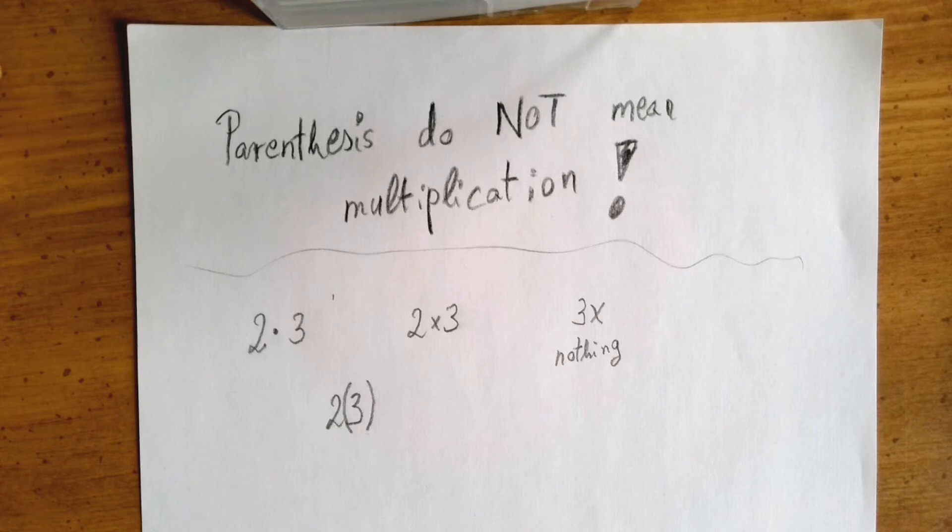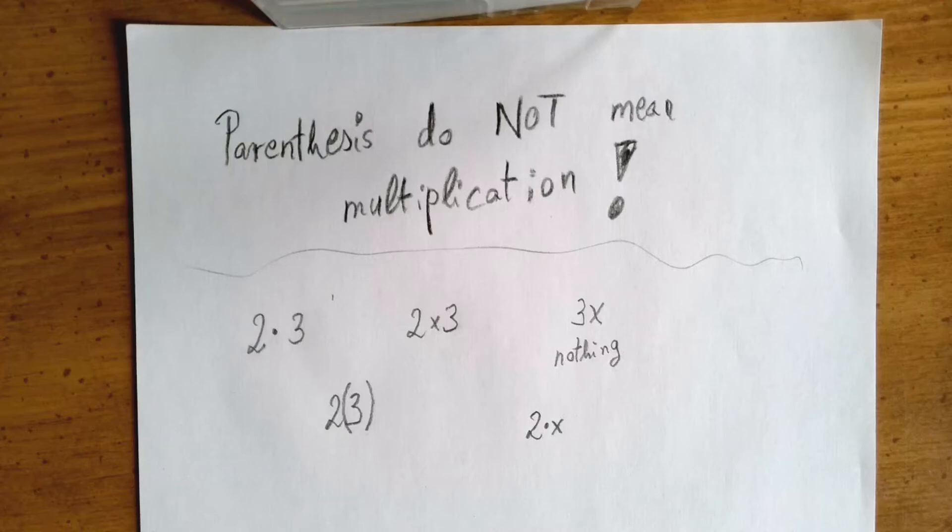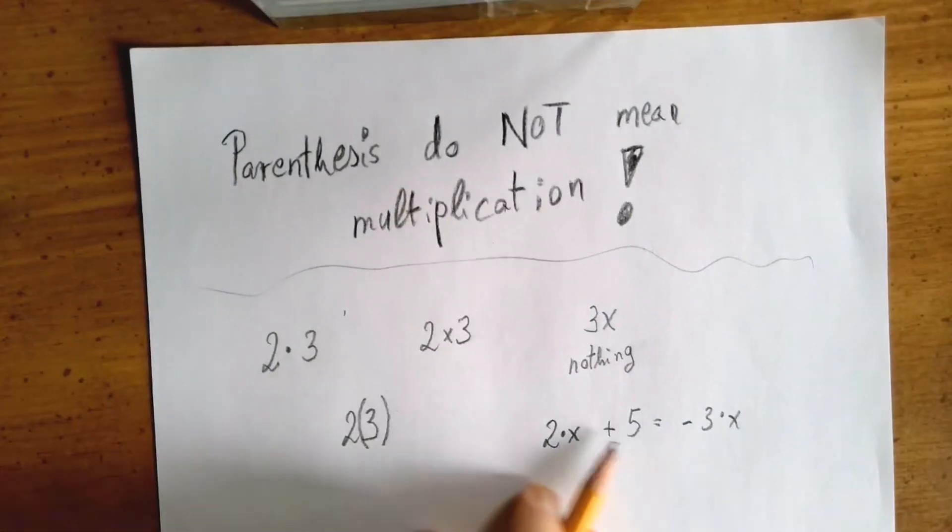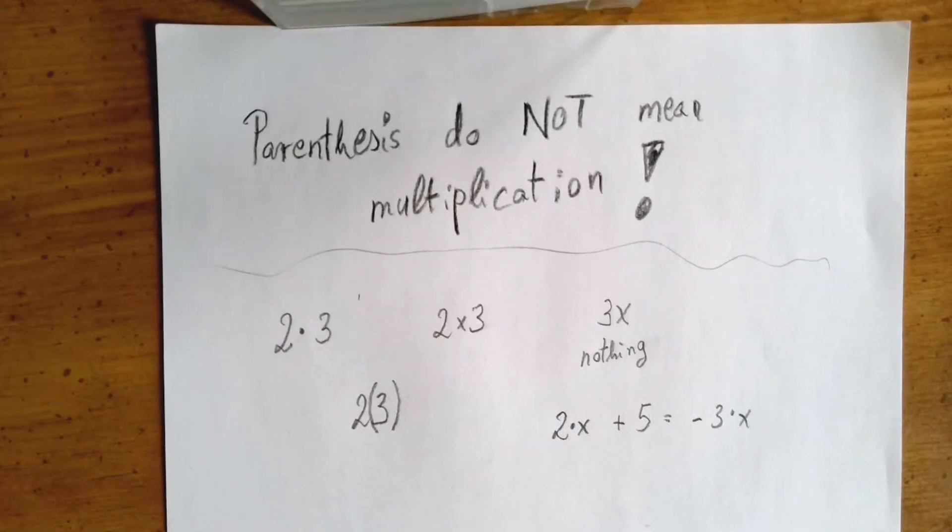And it was probably a good idea to do that because equations would be really weird if you would have to write things like this, right? But this equation is harder to read than the one that we are used to. So we like the nothing notation.